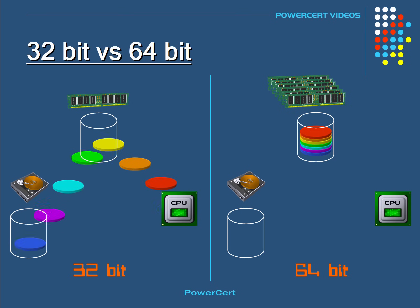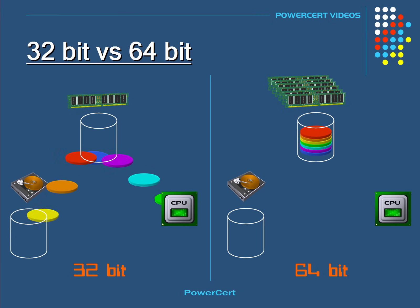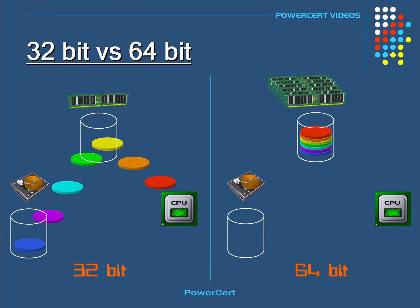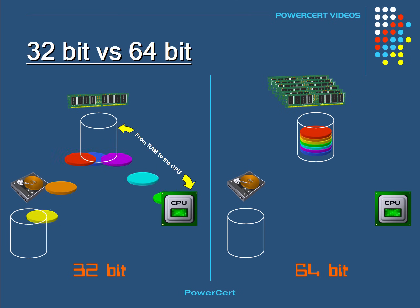In a 32-bit system, since the maximum amount of memory that it can support is 4 gigabytes, it may not be enough to hold all the data that the CPU needs to make the computer run as fast as possible. When this happens, some of the data has to be kept on the slower hard drive to compensate for the low memory. So instead of data going from RAM to the CPU, it has to do extra work by going back to the slower hard drive, and that slows down the computer.